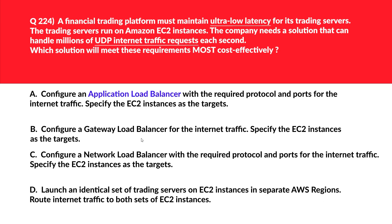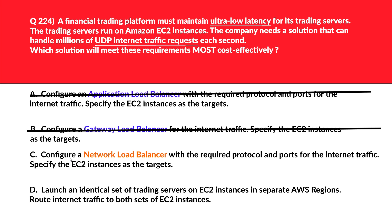This question tests your concepts on networking. Option A says configure an Application Load Balancer with the required protocol and ports. Application Load Balancers are optimized for HTTP and HTTPS traffic, not for handling millions of UDP requests — therefore incorrect. Option B says configure a Gateway Load Balancer. Gateway Load Balancers are used for deploying, scaling, and managing third-party virtual appliances but cannot handle high volumes of UDP traffic — wrong answer.